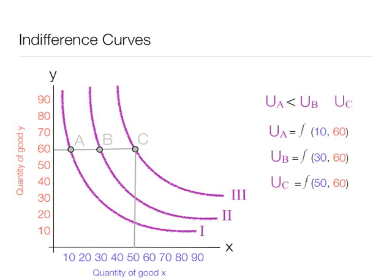Utility at point B is less than utility at point C. The consumer gets the same amount of y and more x, so they should be happier or have a higher level of utility.